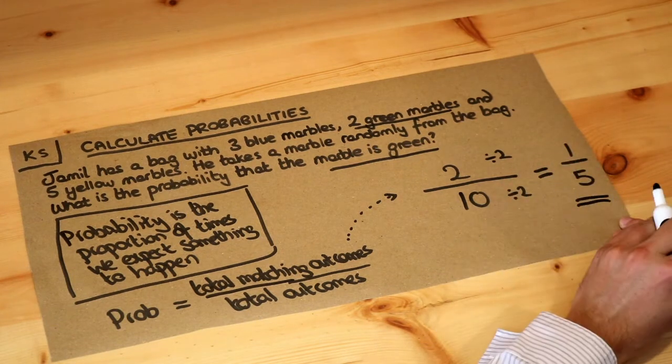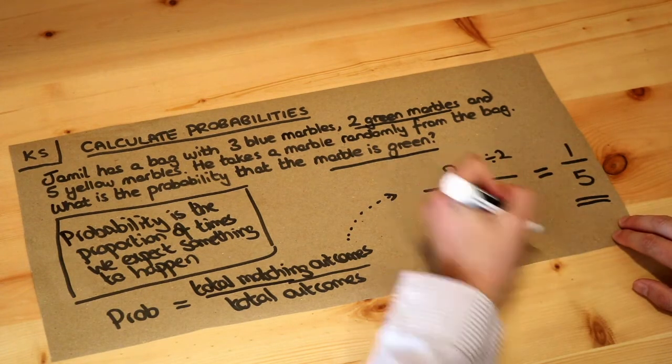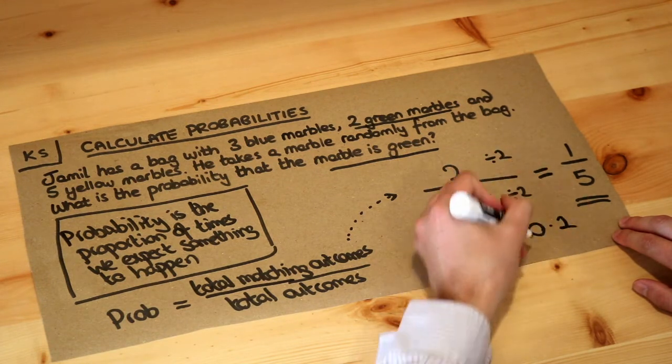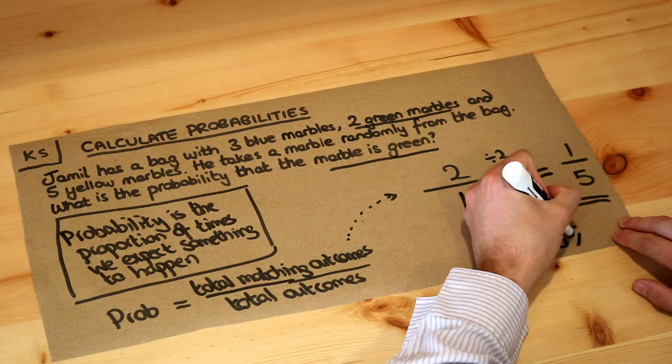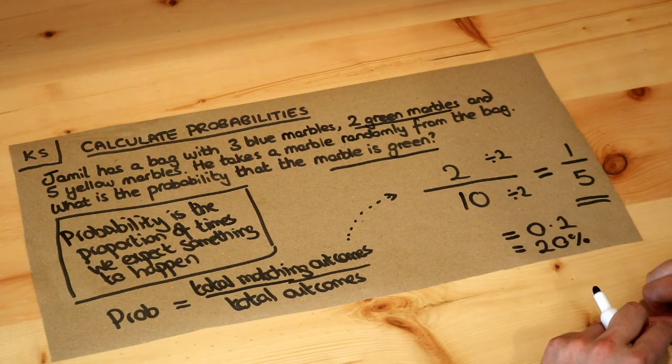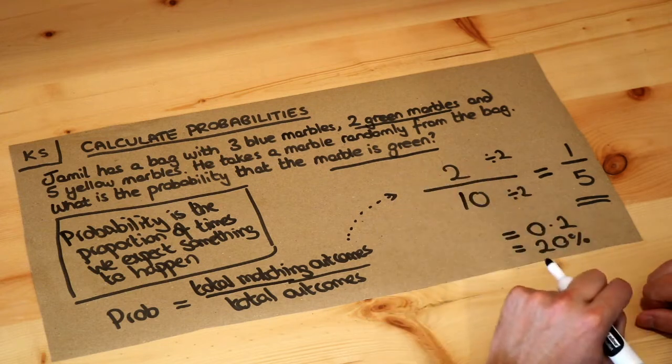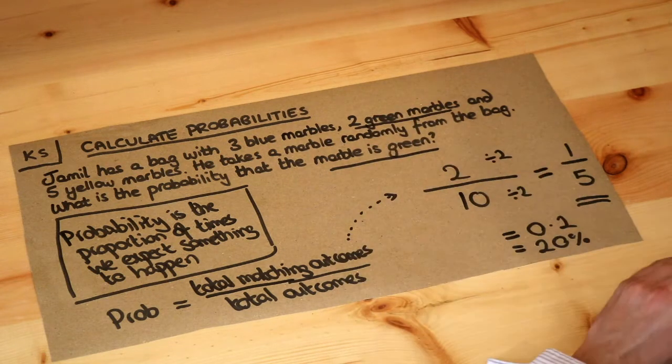We could also give probabilities in decimal form, so one-fifth in decimal form is 0.2, or we could even give it in percentage form. So we could say the probability of getting a green marble from this bag is 20%, because we expect to get a green marble 20% of the time—a fifth of the time.